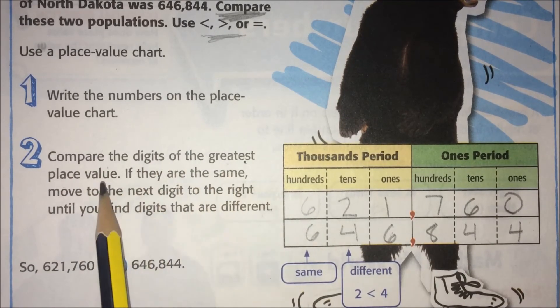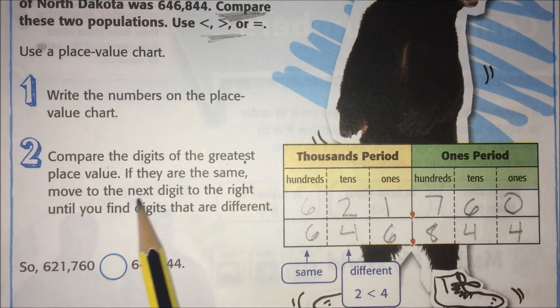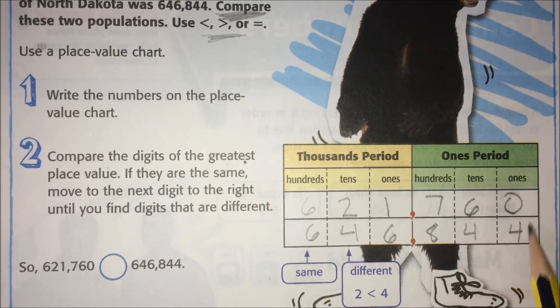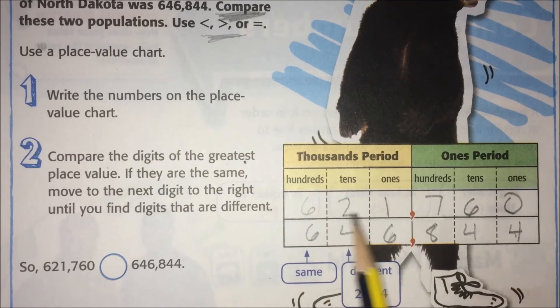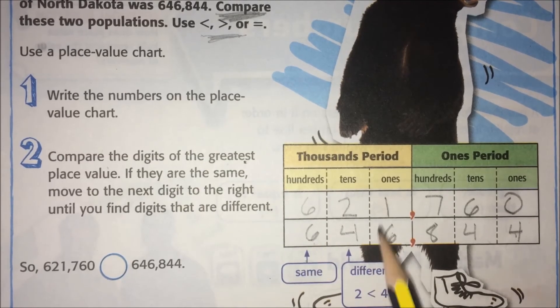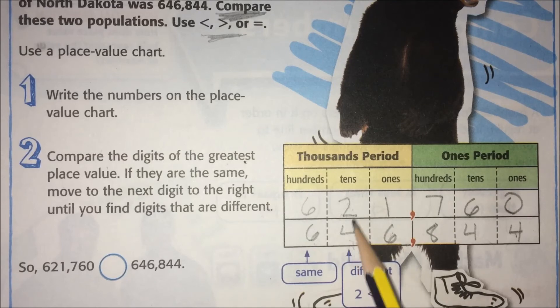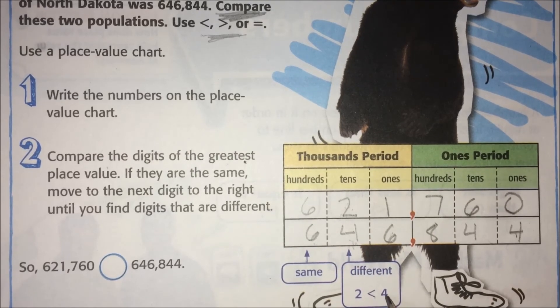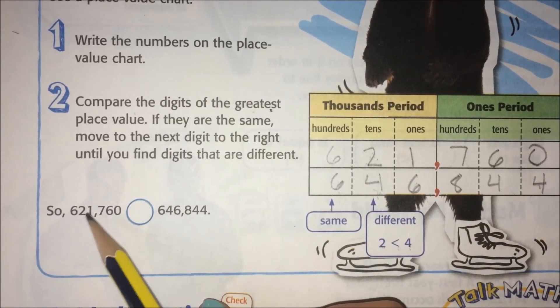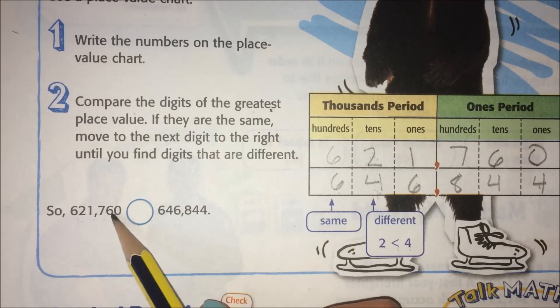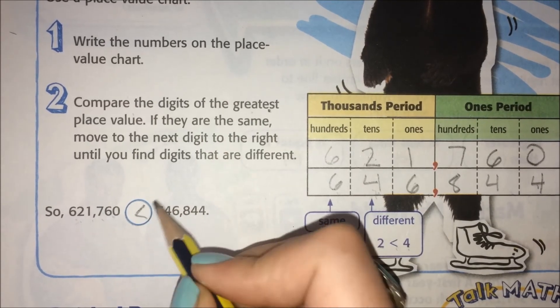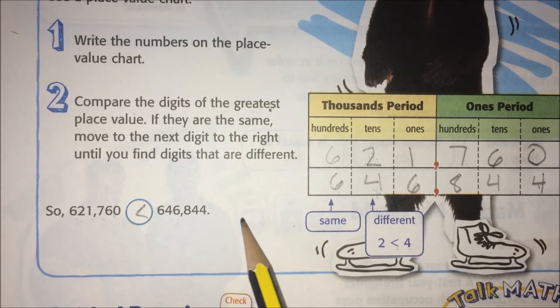Compare the digits of the greatest place value. If they are the same, move to the next digit to the right until you find digits that are different. So we don't want to start down here, because ones don't have very much value. Okay, so sixes are the same, but here we have a 2 and a 4, so the 10,000 places are different. So, these are the numbers we're going to compare. And we see here that 4 is greater than 2, or 2 is less than 4. So, we know that 621,760 is less than 646,844.